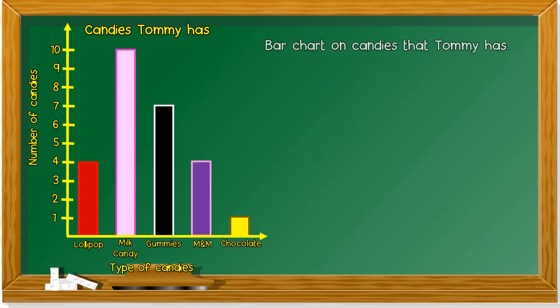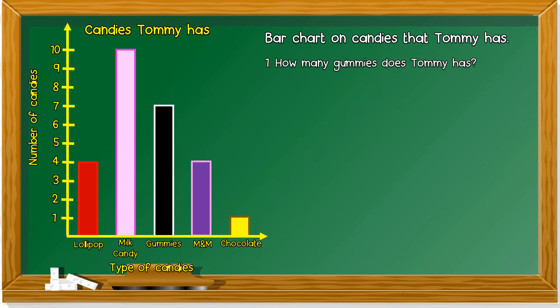Okay, on candies that Tommy has. First question, how many gummies does Tommy have? We look for gummies. Which one is gummies? This one, the black one, right? So it's seven. Tommy has seven gummies.